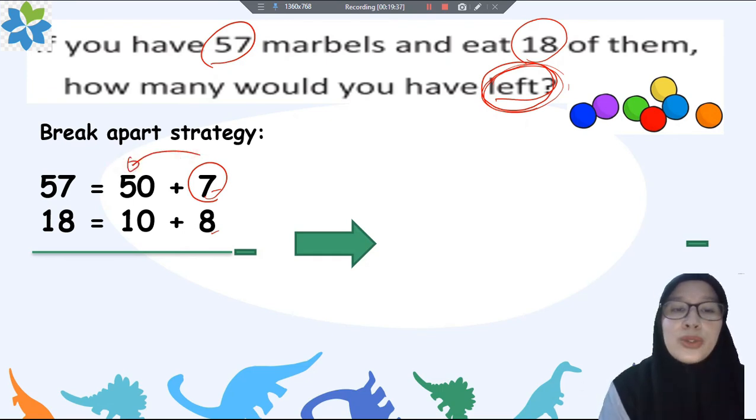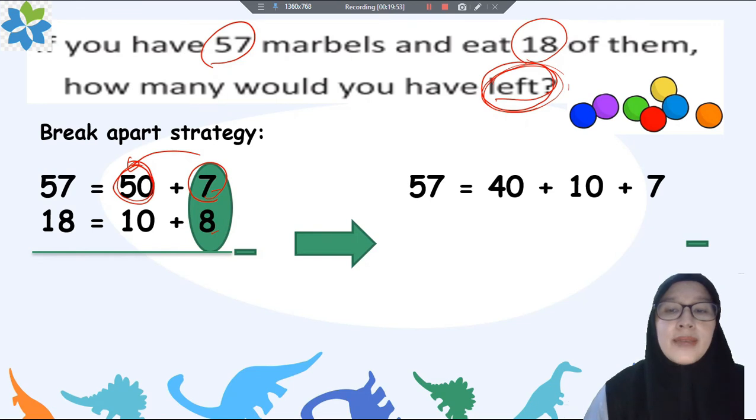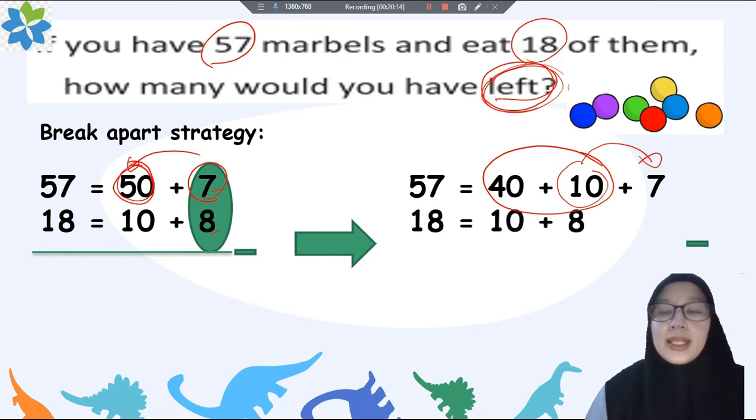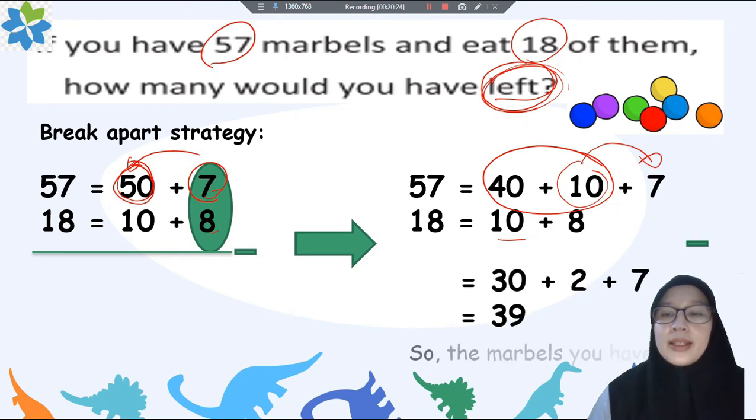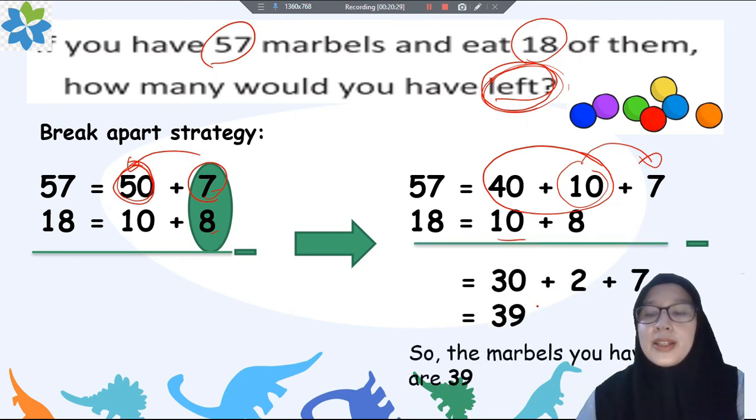Oh it's so difficult to count when you find the small number here so let's borrow from the previous number. Karena 7 dikurangi 8 itu susah ya untuk dihitung, jadi kita minta bantuan ke bilangan sebelumnya atau bilangan puluhan sebelumnya. And then it will become 40 plus 10 plus 7. Ini kita pisahkan dulu karena 10 nya mau dipinjamkan ke 7. Jadi kita lanjutkan untuk 18. 18 karena tidak perlu dipinjam-pinjamkan jadi kita langsung tuliskan kembali 10 ditambah 8. And the result is 39.